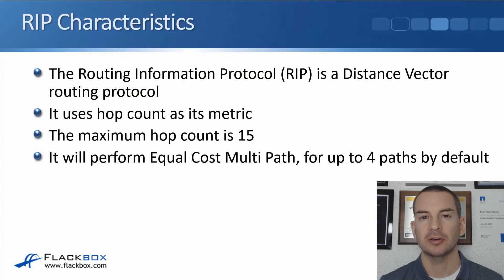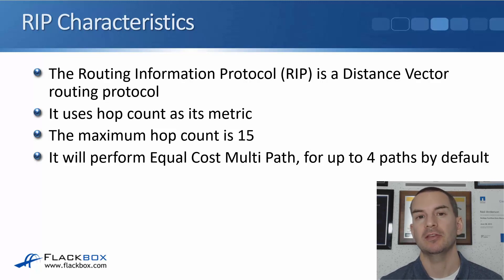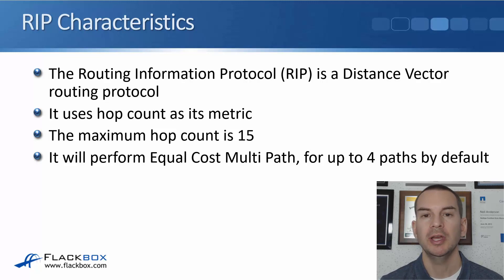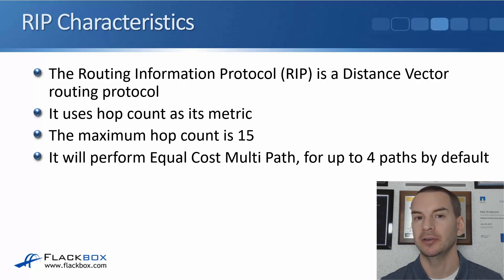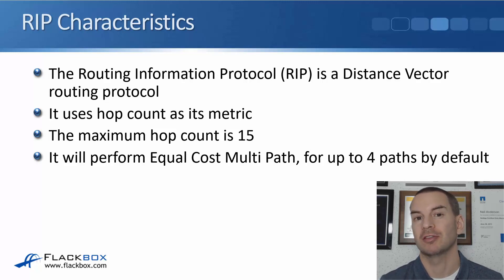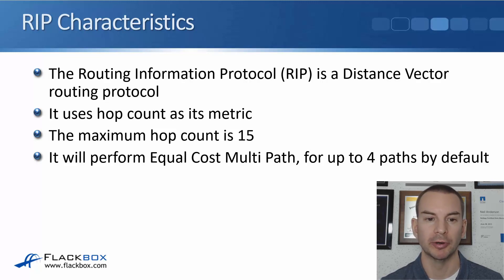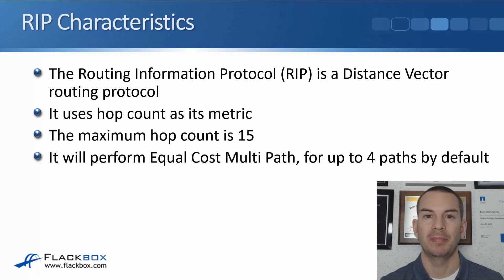In this lecture, you'll learn about RIP, the Routing Information Protocol. RIP is a distance vector routing protocol. We spoke earlier about the difference between distance vector and link state routing protocols. So you know that it's distance vector, meaning it's going to be using routing by rumor. It uses hop count as its metric.